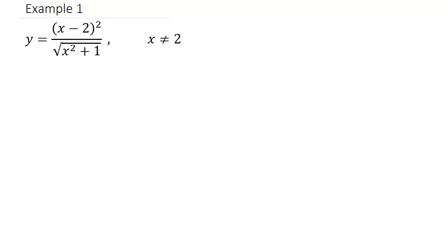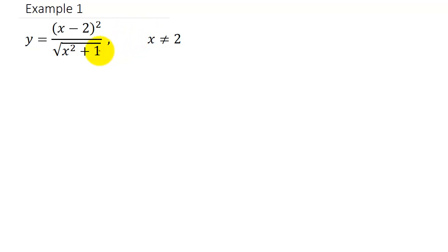In this video we're going to look at logarithmic differentiation. So if you look at this example, we have y equals x minus 2 squared over the square root of x squared plus 1. Now we could find the derivative of this using the quotient rule, but you can see that it would be a mess. When we take the derivative of the numerator we'd have to use the chain rule, and when we take the derivative of the denominator we would have to use the chain rule also.